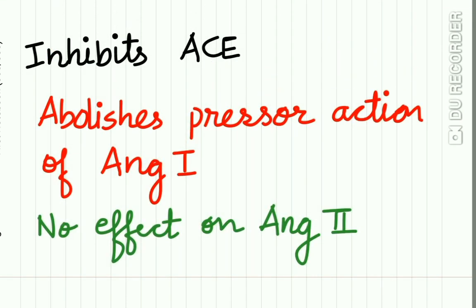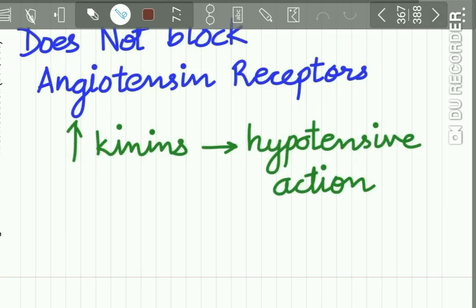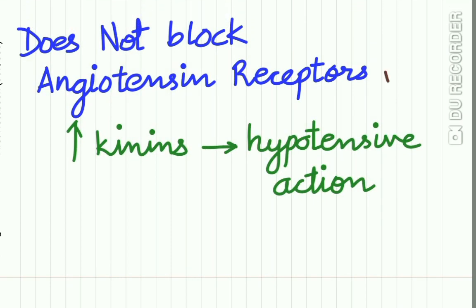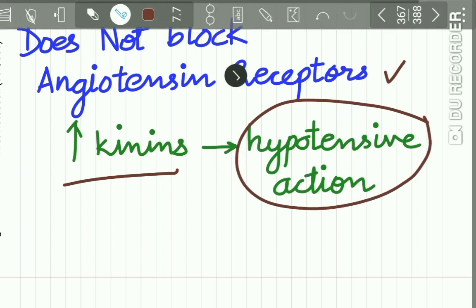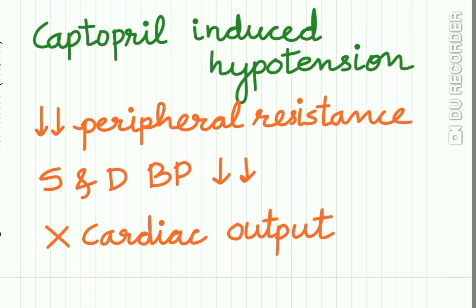Let us study captopril in detail. The actions of captopril: it inhibits angiotensin converting enzyme, abolishes the pressor action of angiotensin 1, has no effect on angiotensin 2, and does not block the angiotensin receptors. It increases the kinin level in plasma, causing hypotensive action. Captopril-induced hypotension results from decreased peripheral resistance. It causes a fall in both systolic and diastolic blood pressure and has no effect on cardiac output.